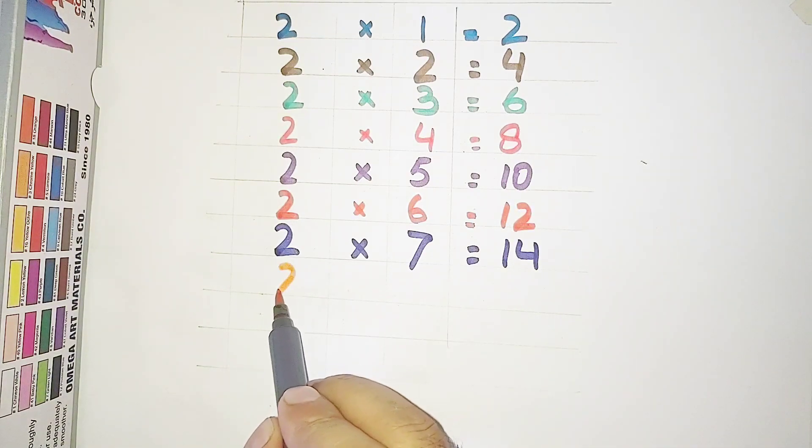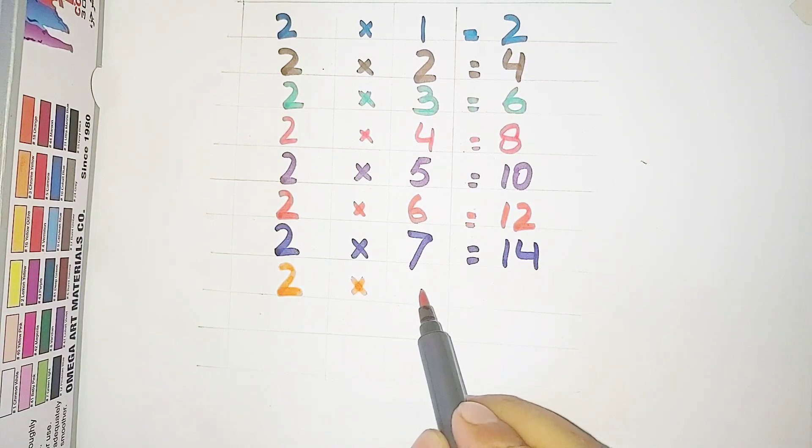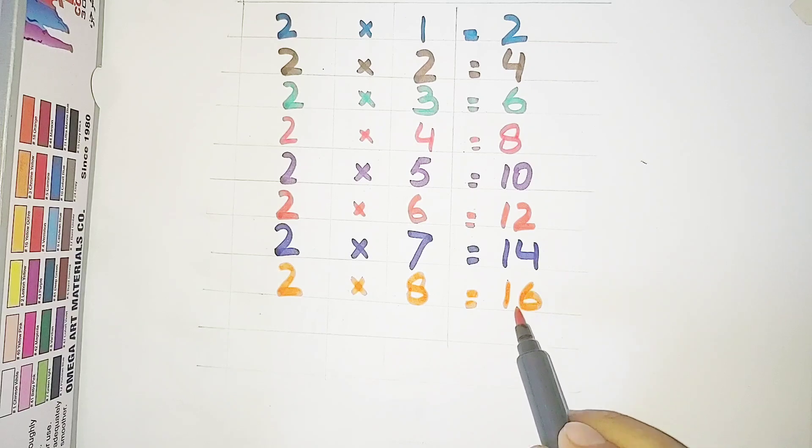Next, 2 multiplied by 8 is equal to 16. 2 eights are 16.